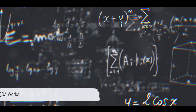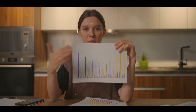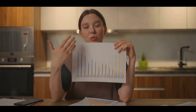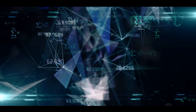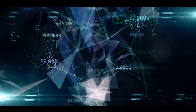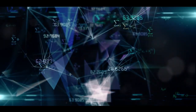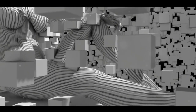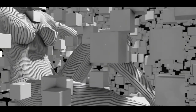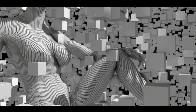How does QDA work? It starts by assuming that the observations within each class of the response variable are drawn from a Gaussian distribution. It then estimates a separate covariance matrix for each class. These covariance matrices allow for the creation of an ellipse-shaped decision boundary, hence the term quadratic.